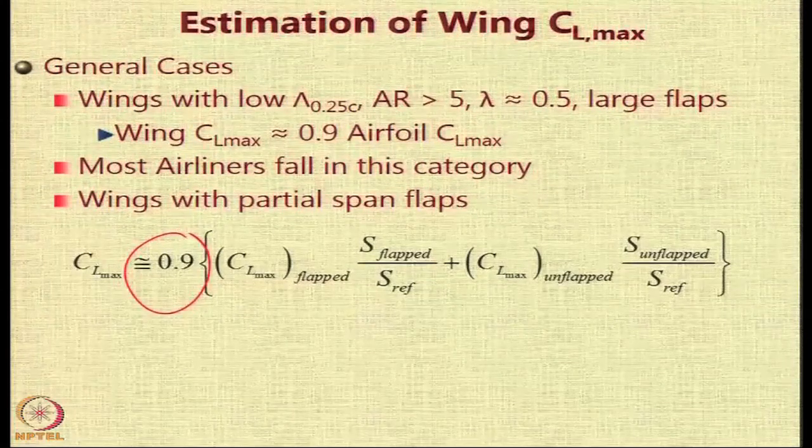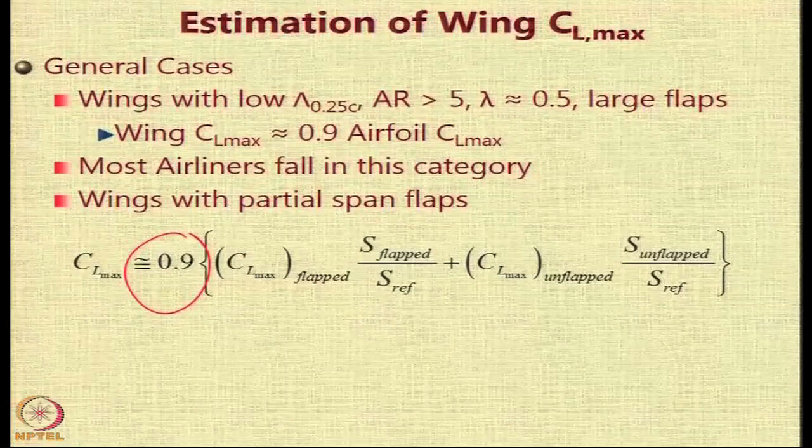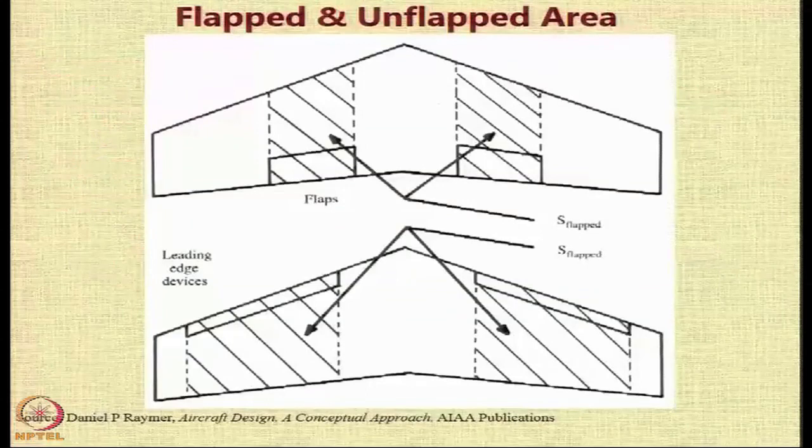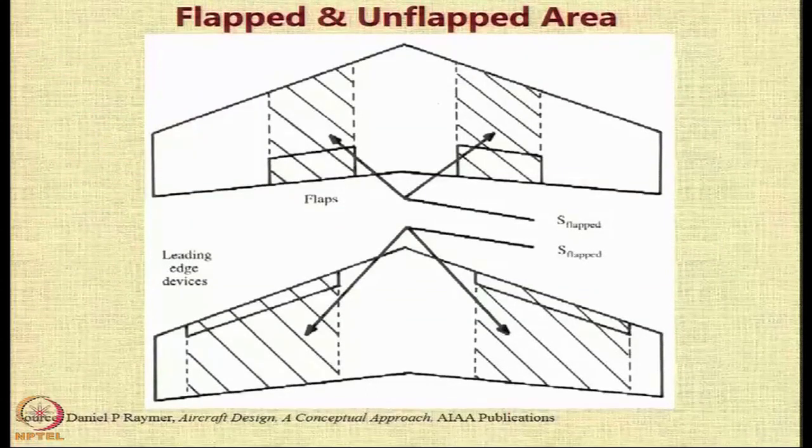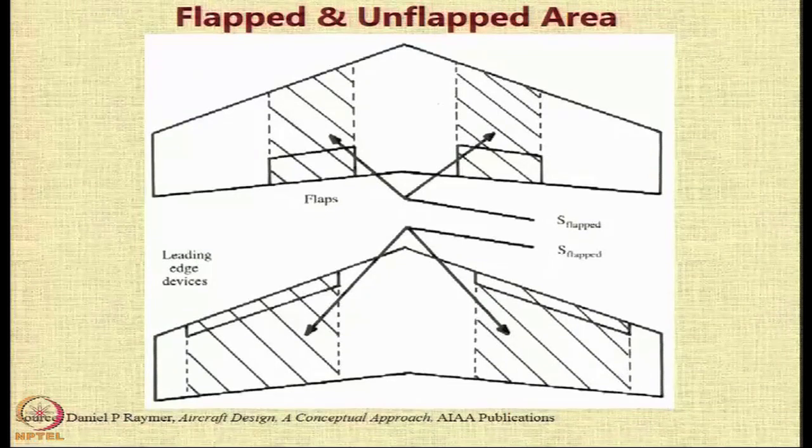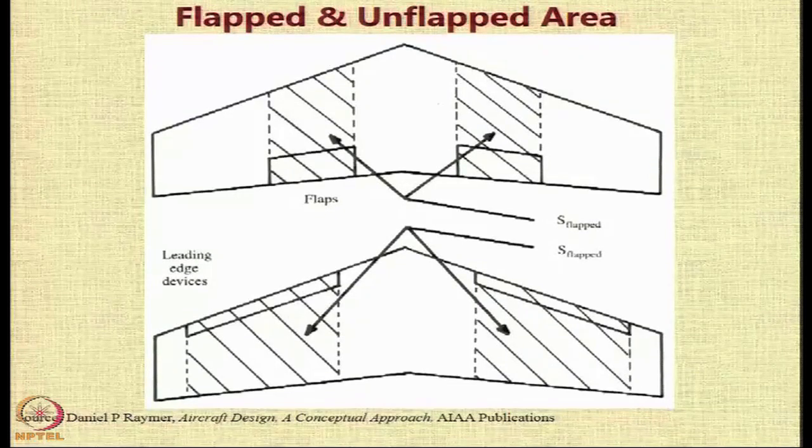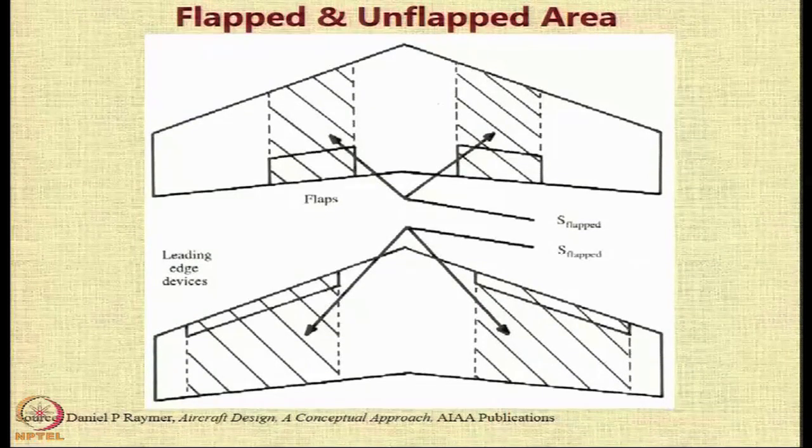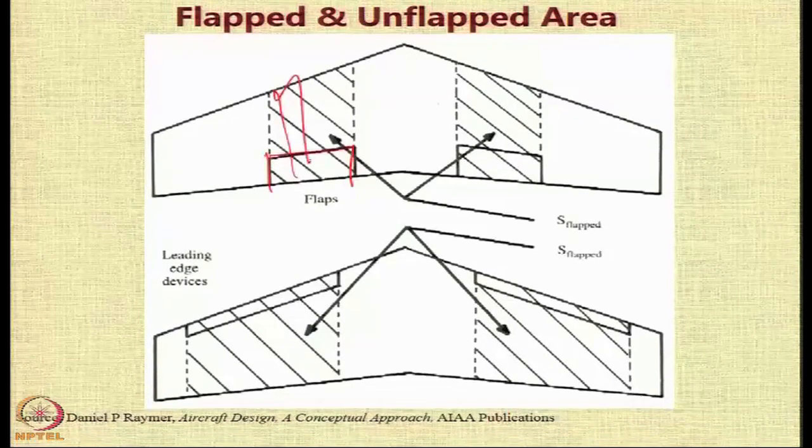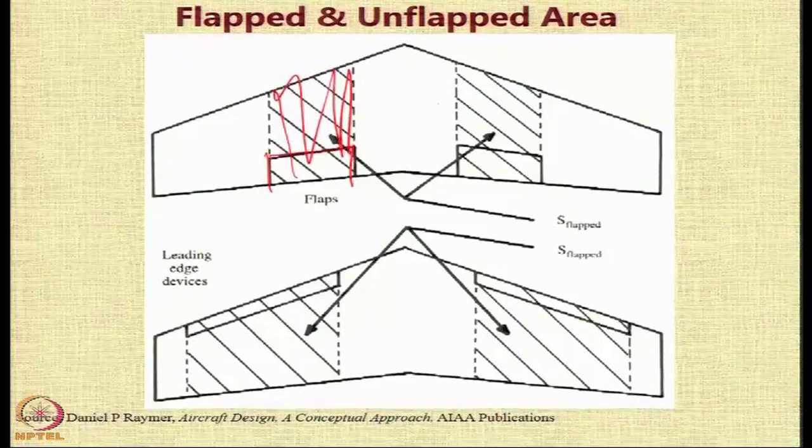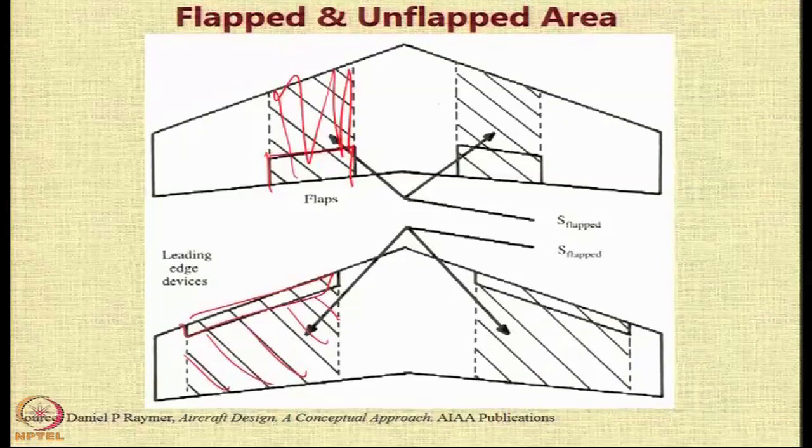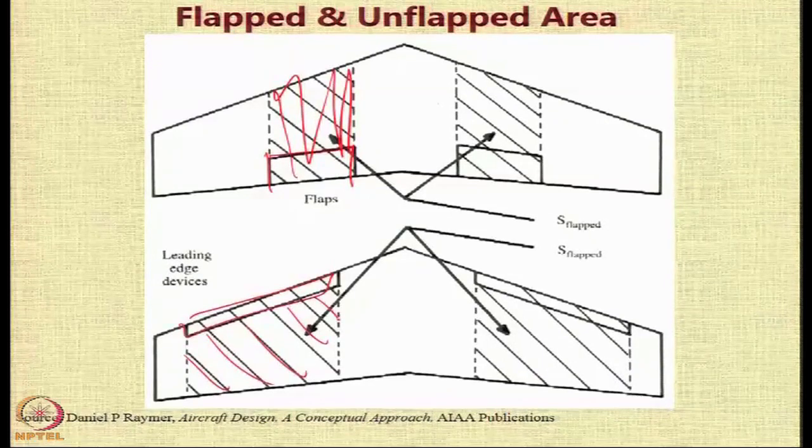But this particular additional term helps you to identify the effects of flapped and unflapped area. And just to show you that the flapped and the unflapped area are the areas which are under the influence of the flap. So if you have trailing edge flaps, then the area ahead of it also becomes a part of the flapped area. And if you have leading edge flaps, then the area behind it also is a part of the unflapped area, of the flap area.